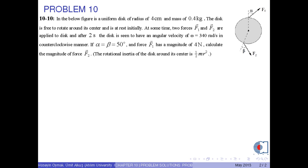A uniform disc of radius 4 cm and mass 0.4 kg is free to rotate around its center and is at rest initially. At some time, two forces F1 and F2 are applied to the disk.